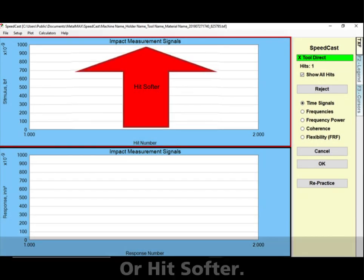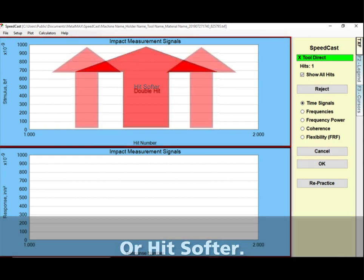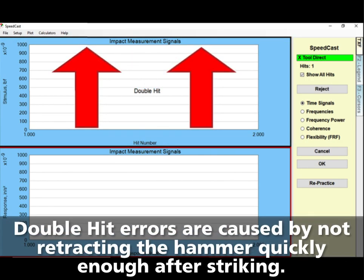You may receive messages asking you to hit harder or hit softer. Double hit errors are caused by not retracting the hammer quickly enough after striking.